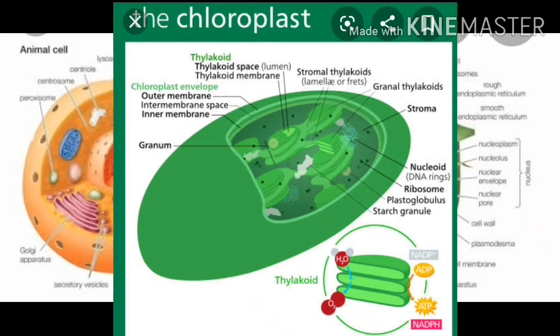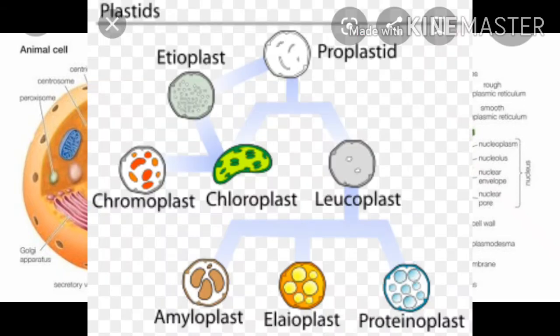Chloroplasts are the most abundant photosynthetically active chromoplasts and are green in color. They contain the green pigment chlorophyll and a small quantity of yellow pigment called xanthophyll. Life sustains in this universe because of chloroplasts. They help in the process of photosynthesis, during which organic food is produced from CO2 and H2O. This food becomes the food of the whole living world, directly or indirectly. Chloroplasts are abundant in aerial parts of the plant such as leaves, raw fruits like tomato, chili, and mango.